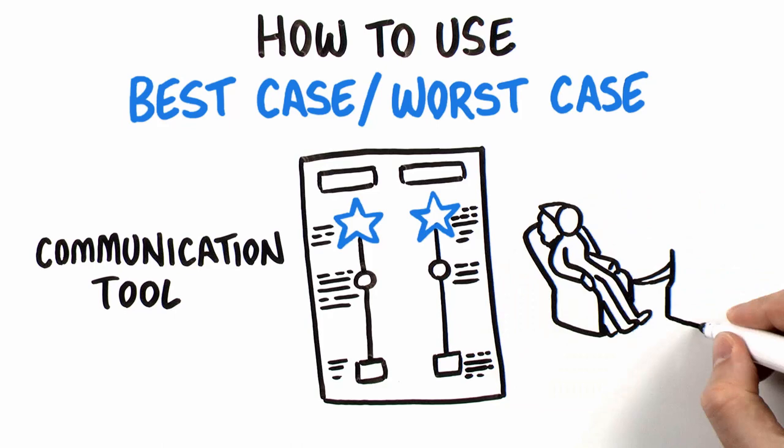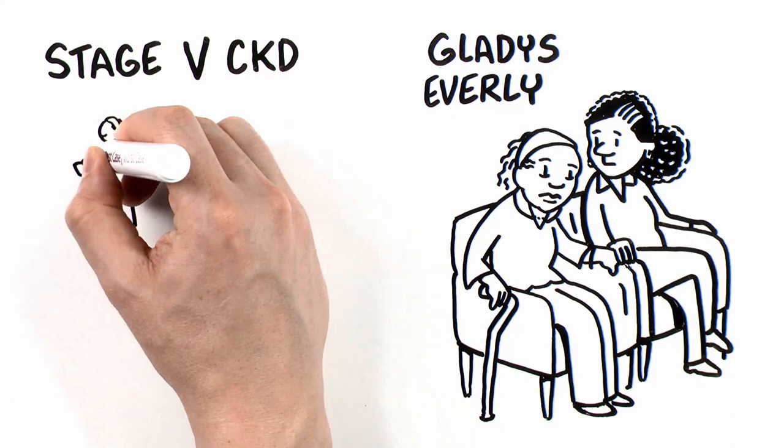This story starts with your patient, Ms. Gladys Everly. She's an 83-year-old female with stage 5 CKD, heart failure, and a remote history of stroke. She lives alone, but has family nearby.